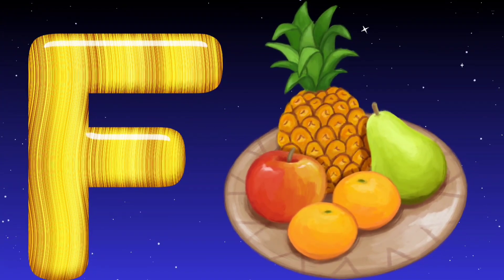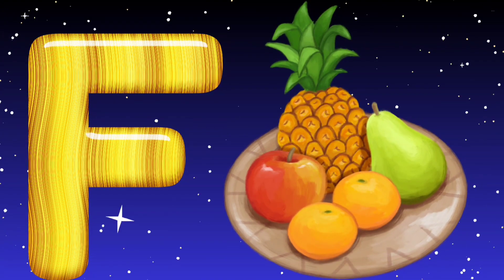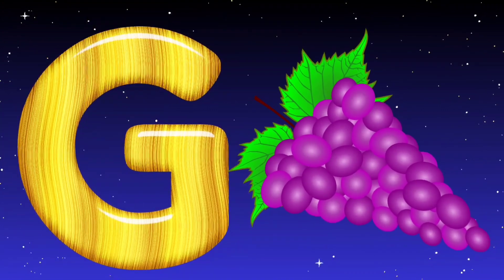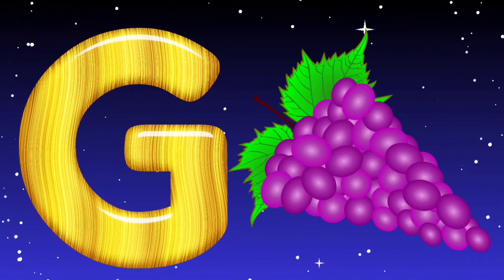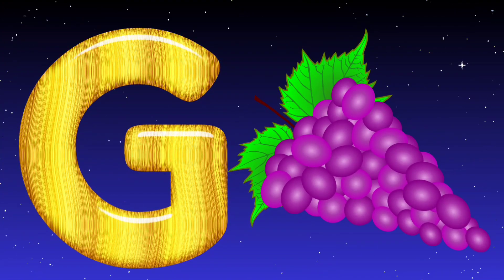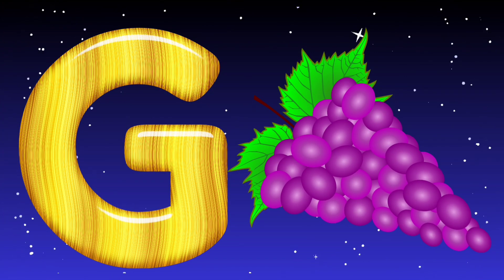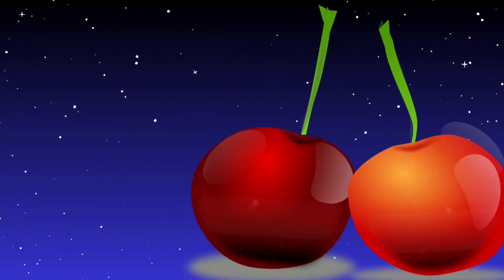F is for fruits. Fruits mean phal. G is for grapes. Grapes mean angoor.